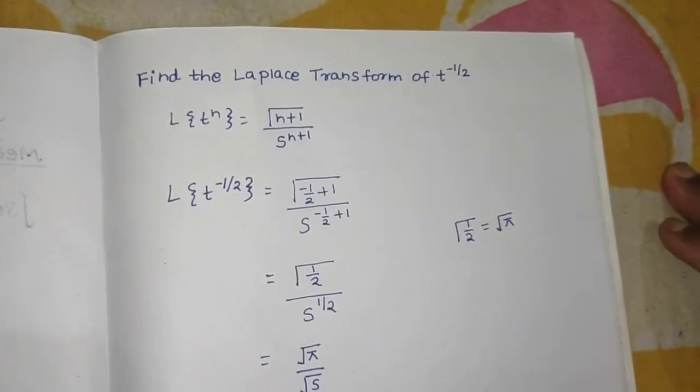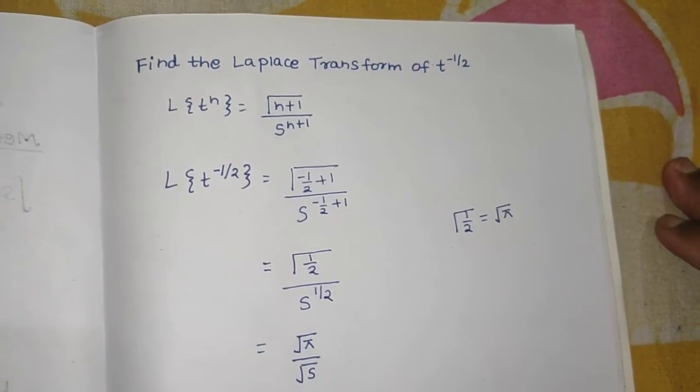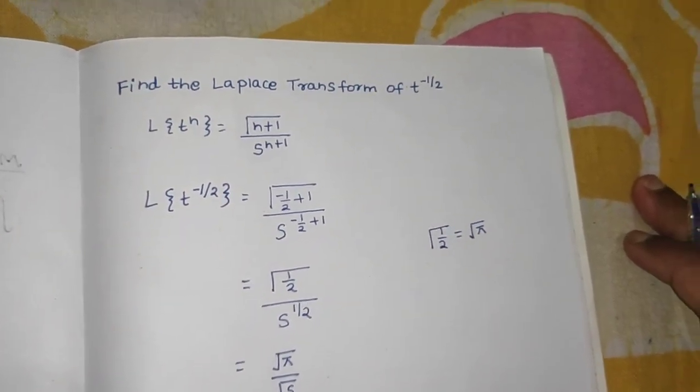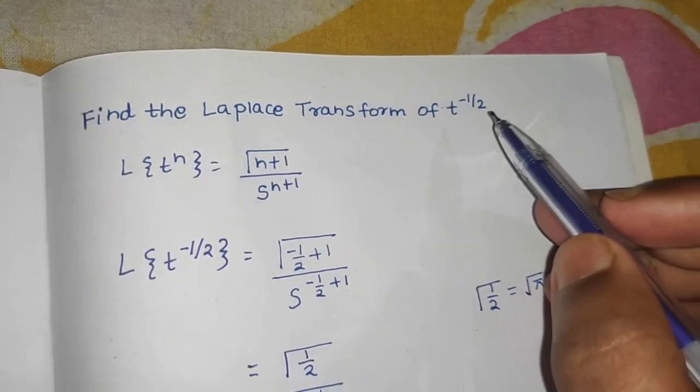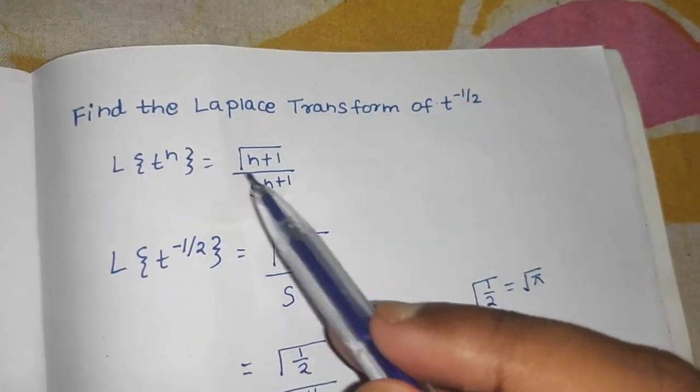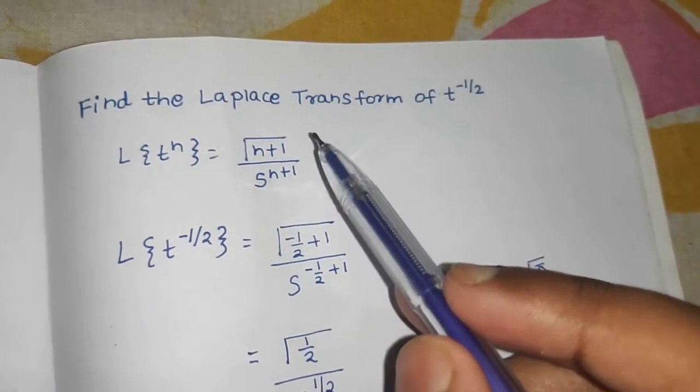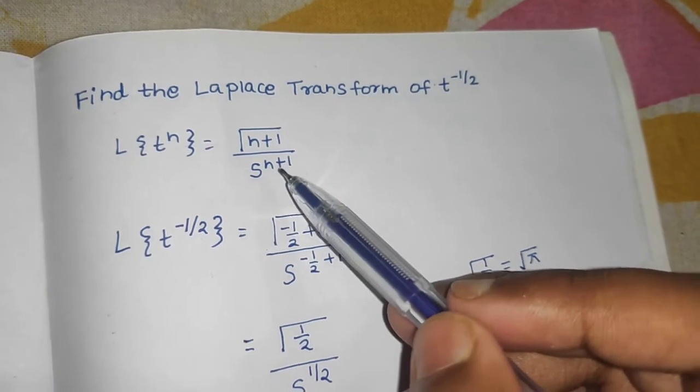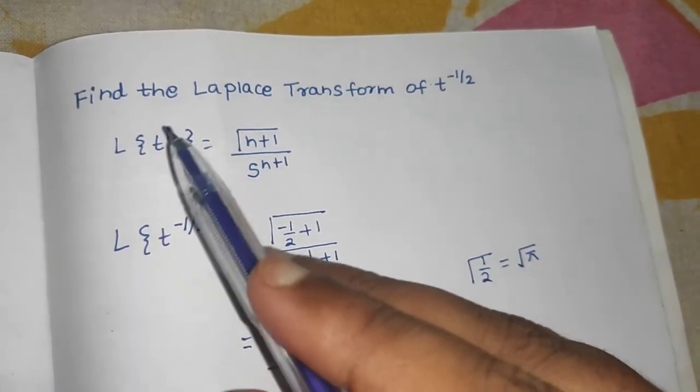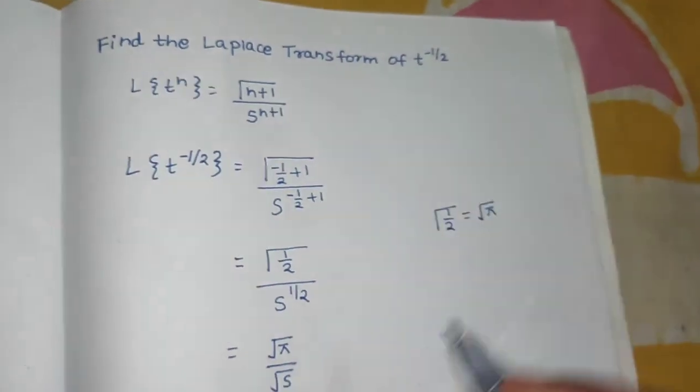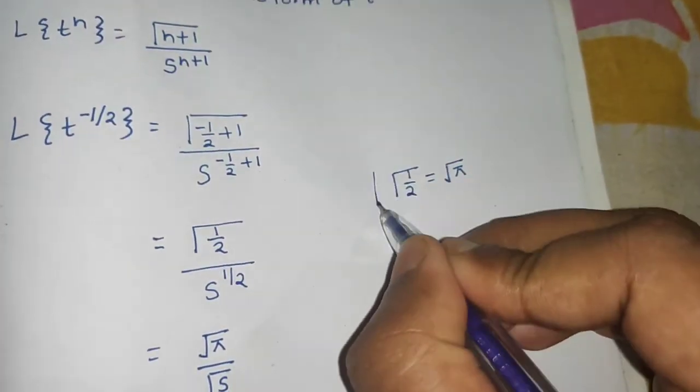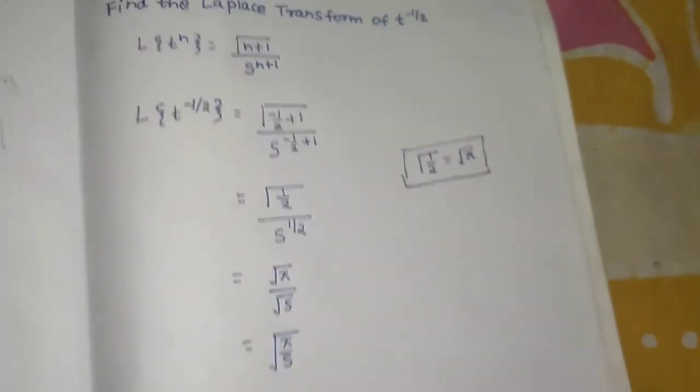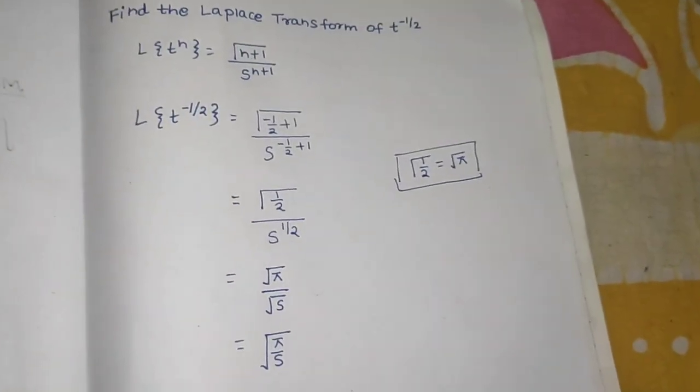So easy problem from Laplace transform because we directly use the formula. We know that this is a negative and also not an integer, so you will not use the factorial notation, rather we use the gamma notation: gamma n plus 1 divided by s raised to power n plus 1. In this question n was minus half. So we used the formula and gamma of half is root pi, and we easily solved this question.